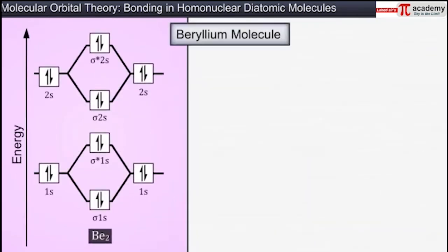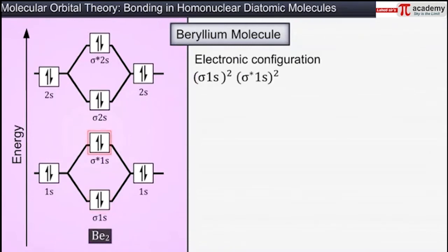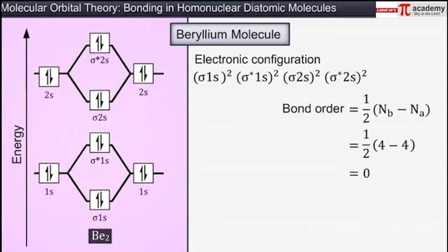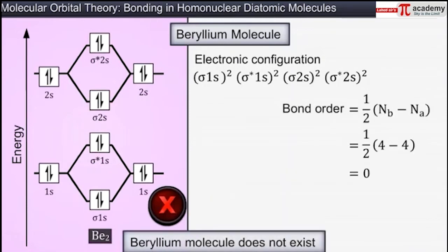Similarly, the beryllium molecule has an electronic configuration of sigma 1s² sigma star 1s² sigma 2s² sigma star 2s², and a bond order of 0, and is therefore considered to be non-existent.